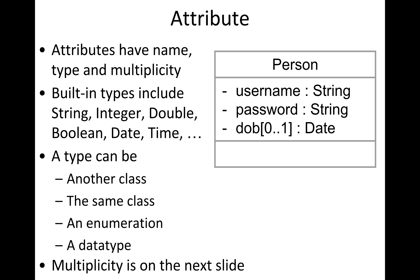UML allows us to talk about classes at a very high-level conceptual level, so we're not necessarily talking about implementation in Java, C#, or whatever object-oriented language we choose. This allows any person who understands object orientation to talk to anyone else without specifying a particular language implementation.